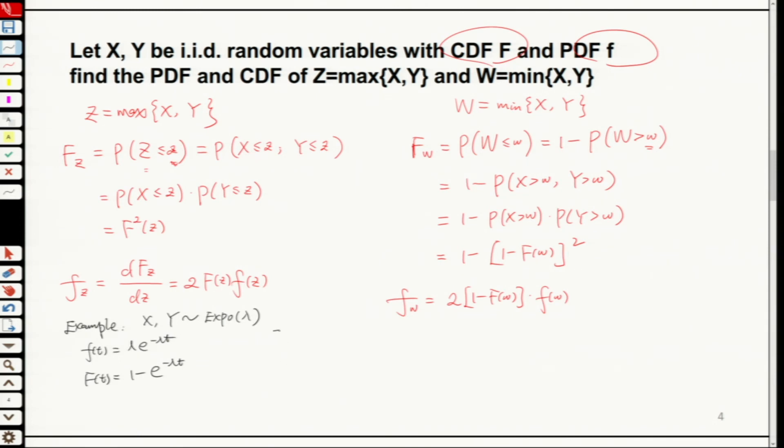Now suppose Z equals to max X and Y. What is Fz? Probability Z equals to z. This is our formula, right? Fz equals to 1 minus exponential minus lambda t squared.